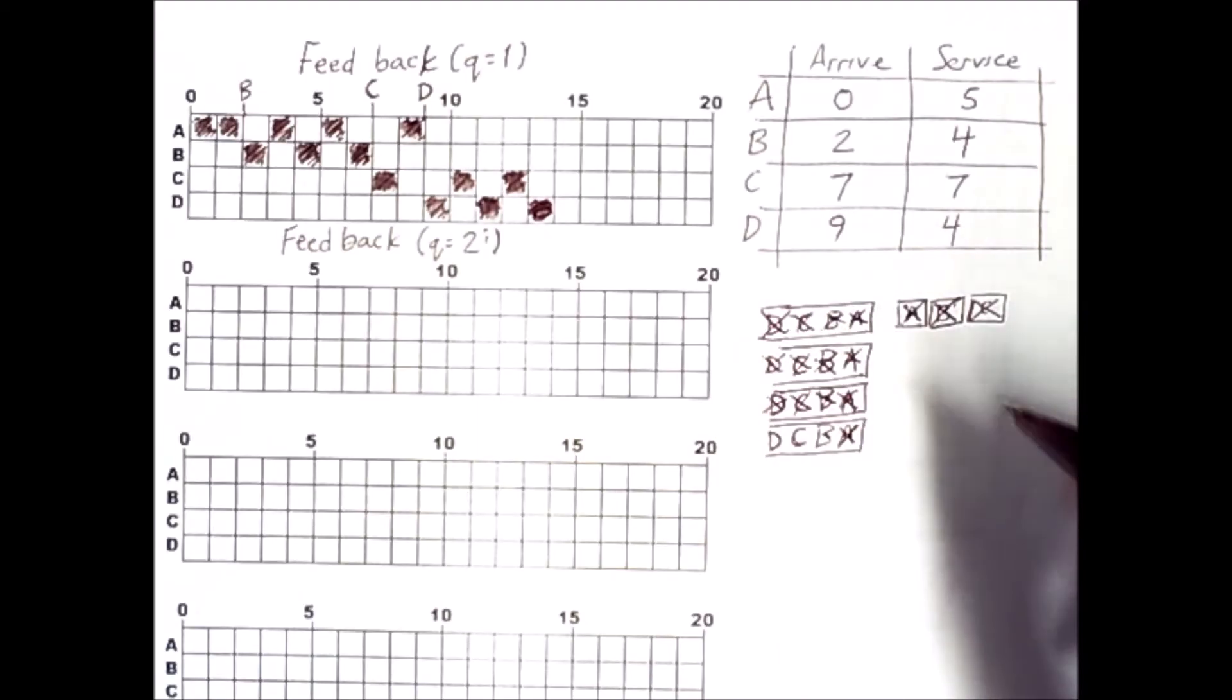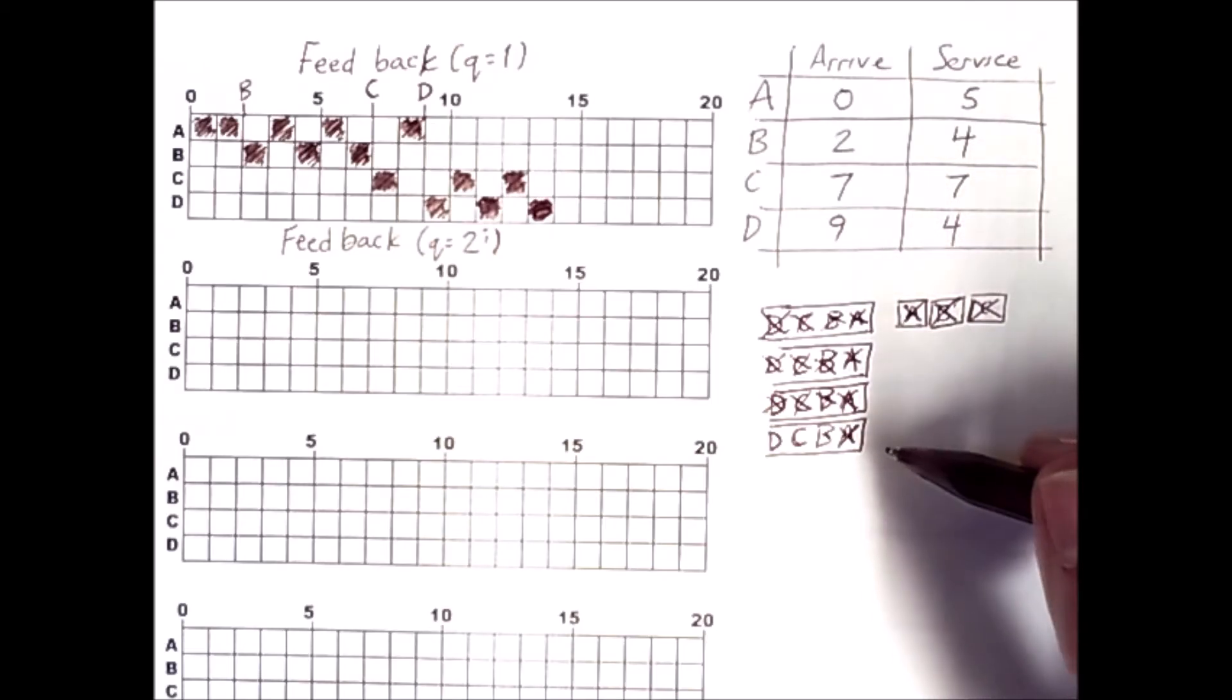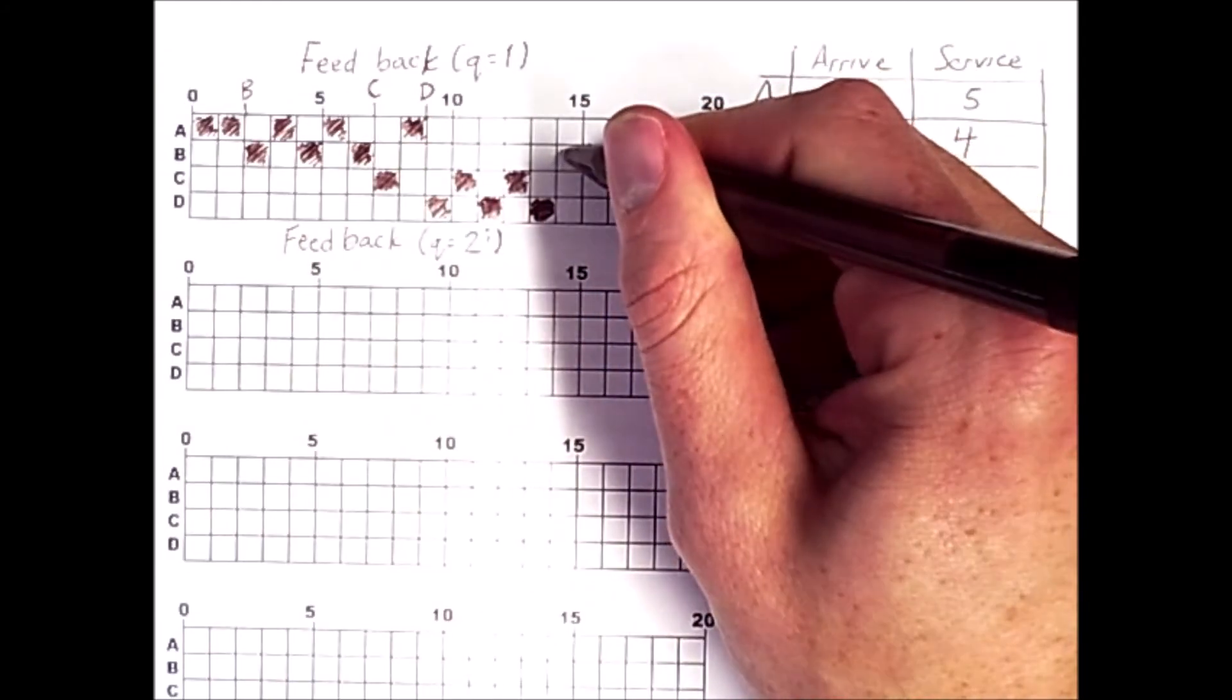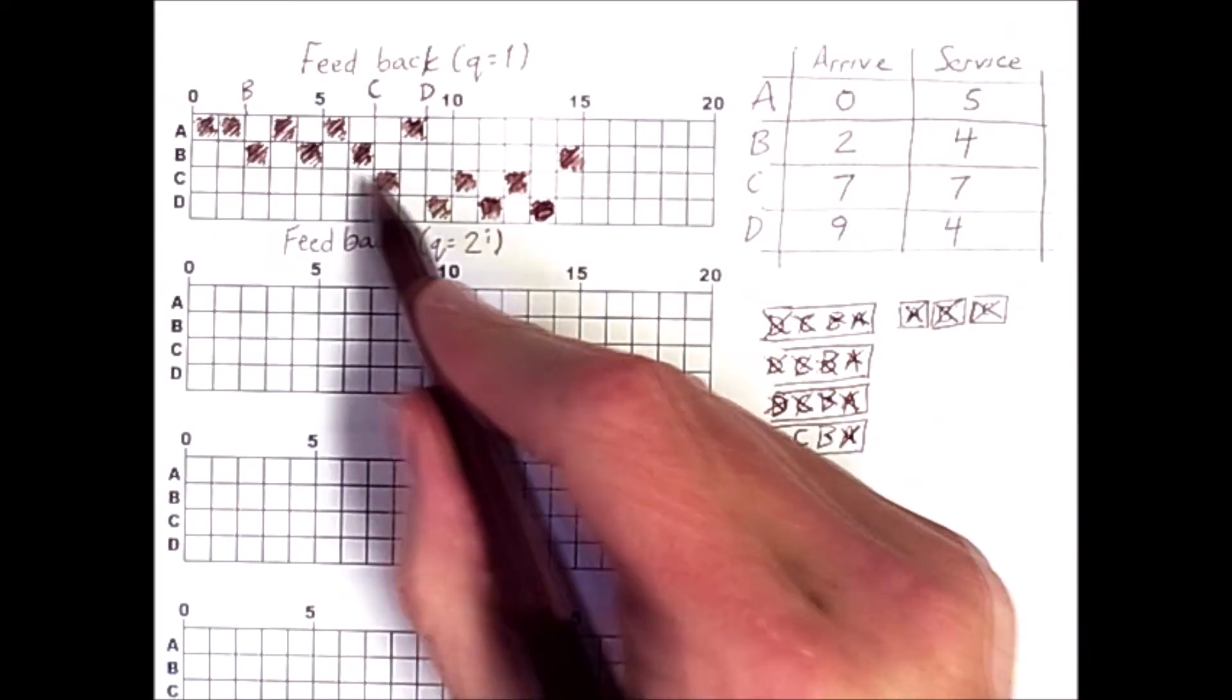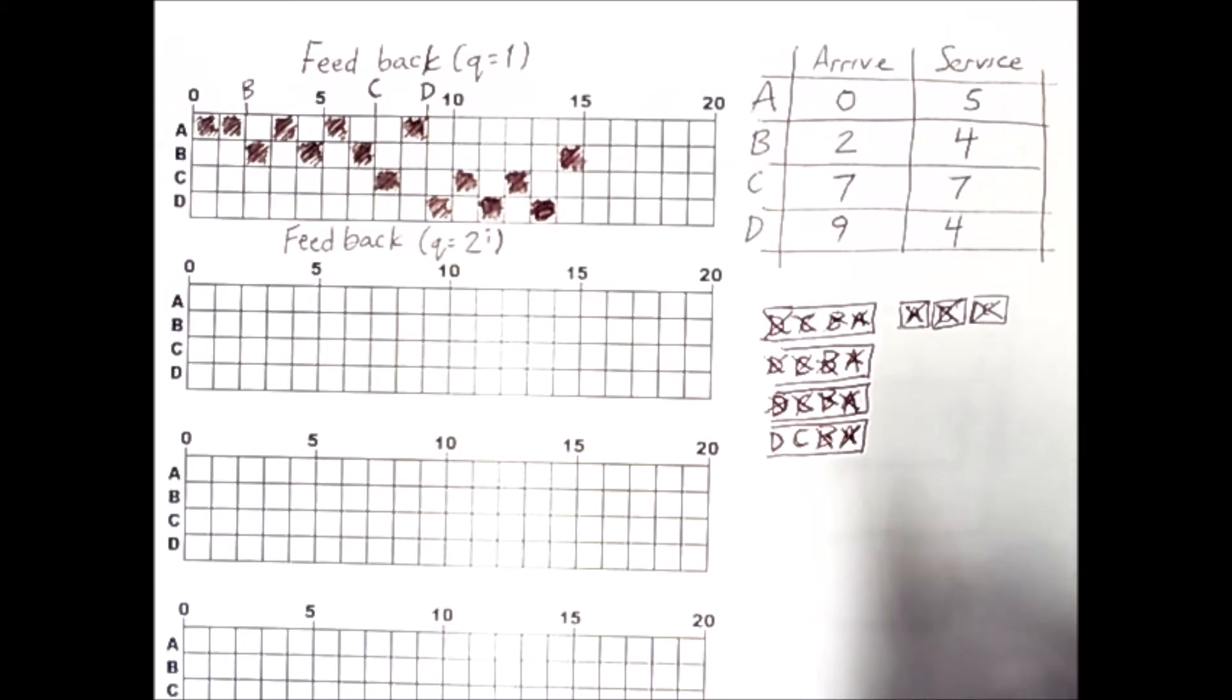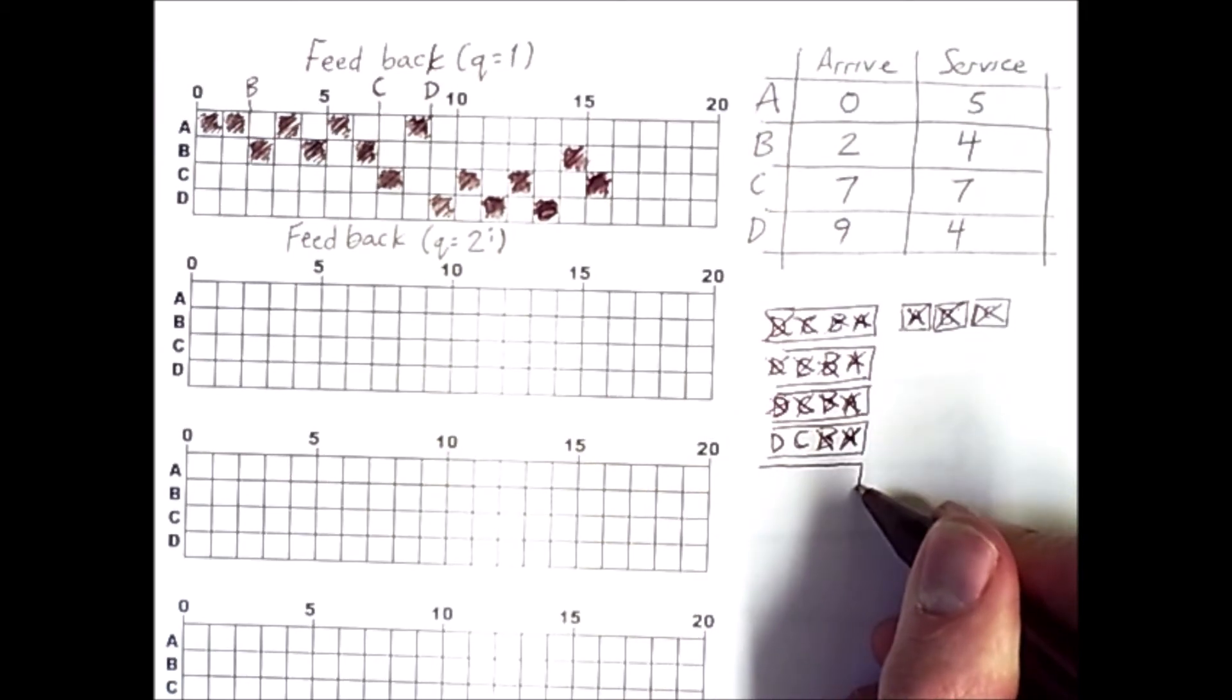And now, finally, D gets to run again. So D had to wait for the other processes to move through the higher priority queues. But it is now B's time again. So B will execute here. And because B's service time is 4: 1, 2, 3, 4, it is done now. And C will run. And when C runs, we go down yet another queue.